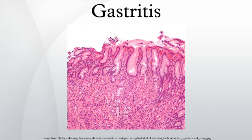Several regimens are used to treat H. pylori infection. Most use a combination of two antibiotics and a proton pump inhibitor. Sometimes bismuth is also added to the regimen. The antibiotic aids in destroying the bacteria, and the acid blocker or proton pump inhibitor relieves pain and nausea, heals inflammation, and may increase the antibiotic's effectiveness.